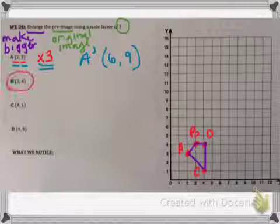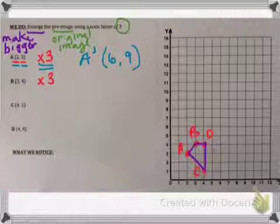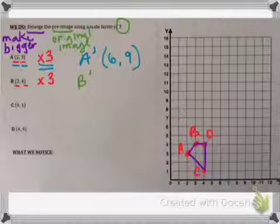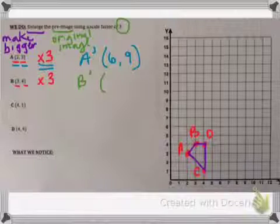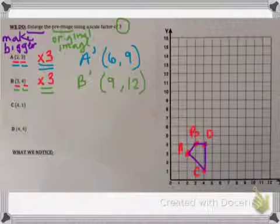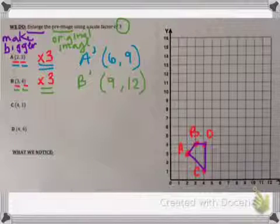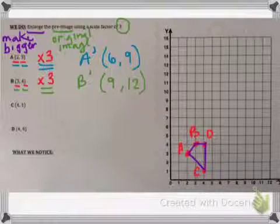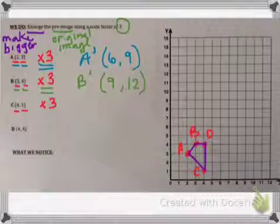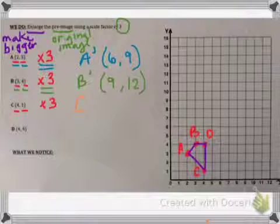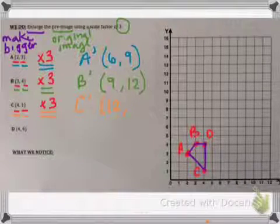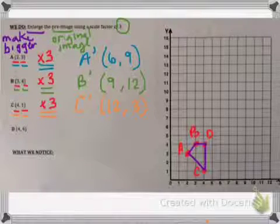Now for point B — multiply both coordinates by 3. B prime: 3 times 3 is 9, and 4 times 3 is 12, so B prime is at (9, 12). Save plotting for the end. For point C, multiply by 3: 4 times 3 is 12, and 1 times 3 is 3. C prime is at (12, 3). Save the plotting for the end.